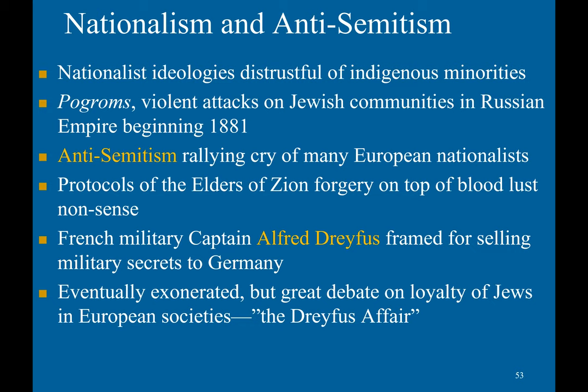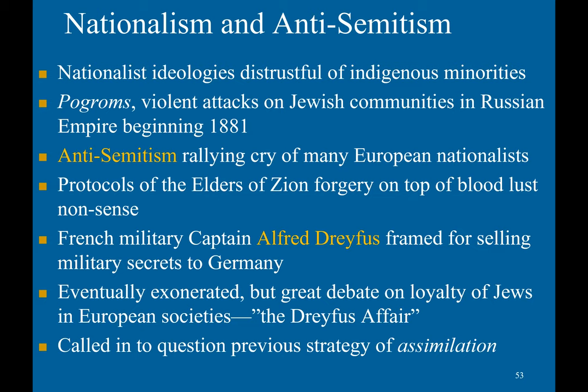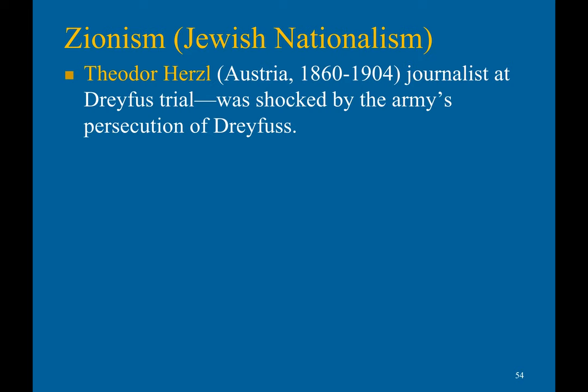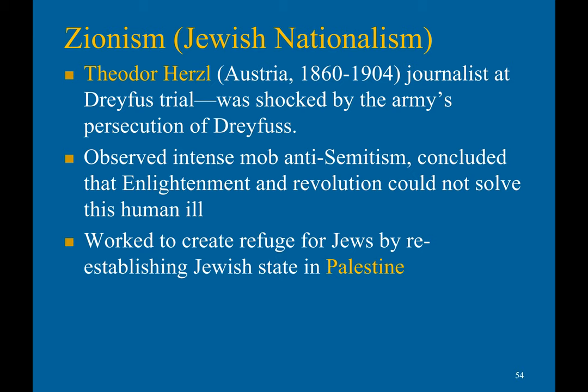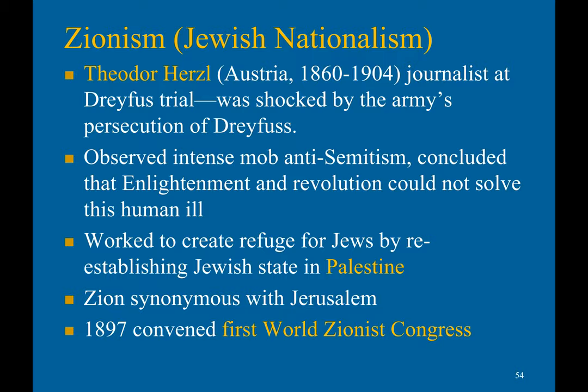The Dreyfus Affair became a key event in the evolution of Zionism. Theodor Herzl, a journalist who would become the founder of Zionism, was present at the Dreyfus trial. He was shocked by the ferocity of the prosecution of Dreyfus, observed intense anti-Semitic mobs, and concluded that the Enlightenment revolution could not solve this human ill. He worked to create a refuge for Jews by reestablishing a Jewish state in Palestine — basically, Zion became synonymous with Jerusalem. In 1897, he convened the first World Zionist Congress.